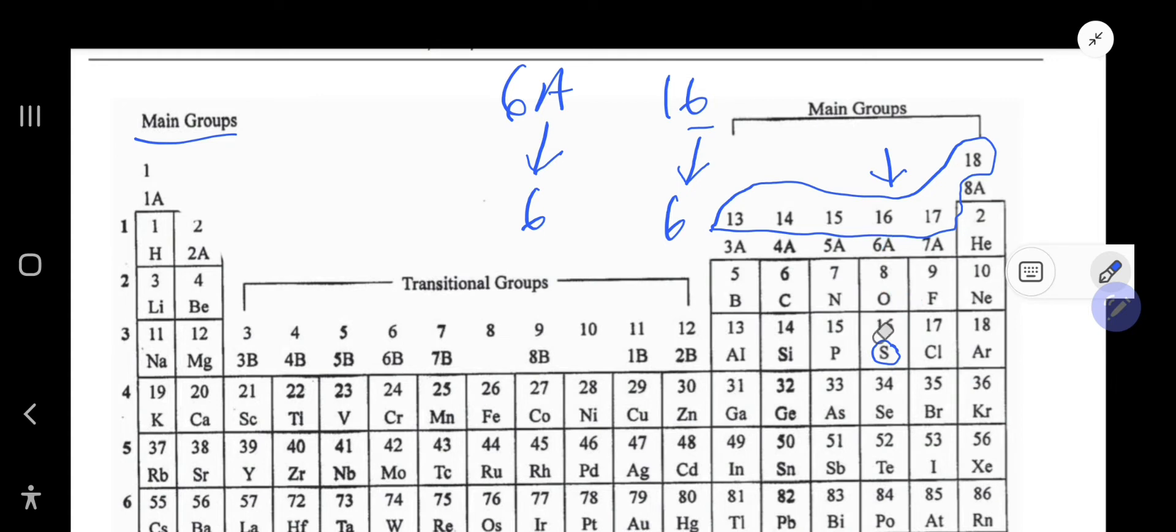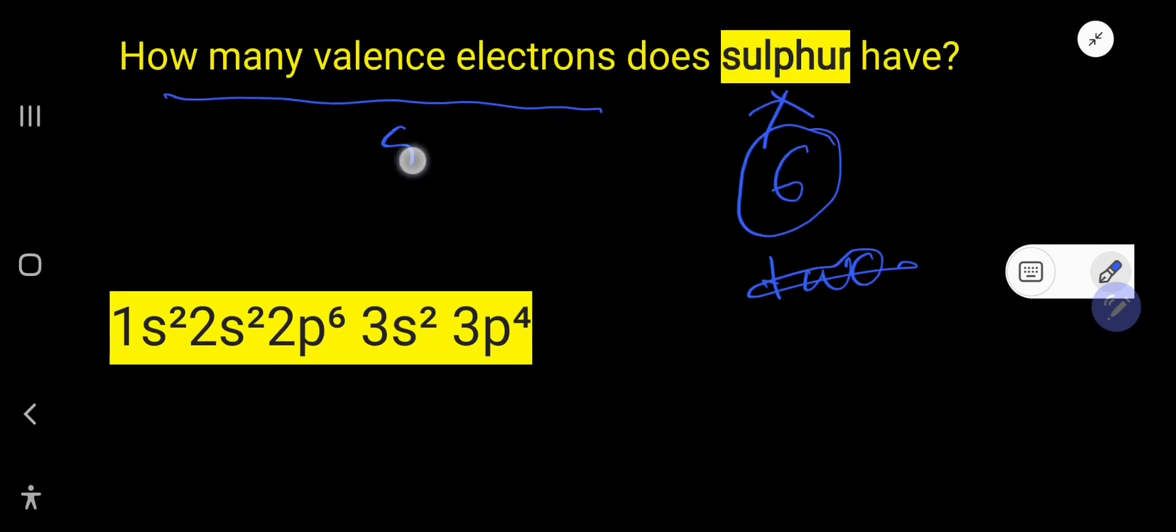Now, I will show you the second way to find out the valence electrons for sulfur. The atomic number of sulfur is 16. The atomic number of sulfur 16 means it has 16 protons and 16 electrons. If you write the electron configuration, then you will get this.